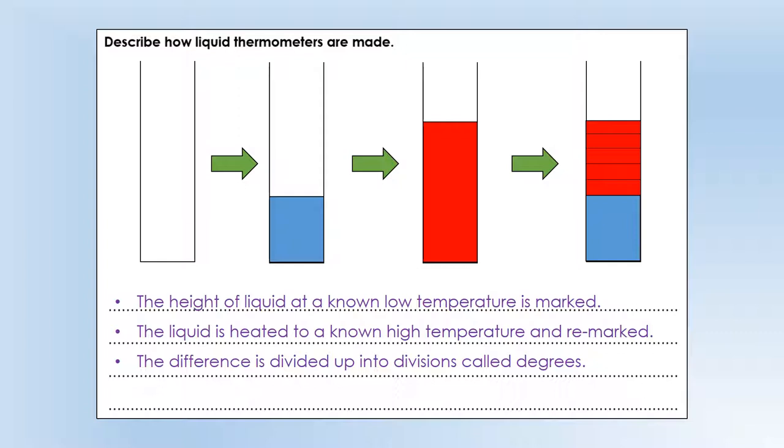Then all you have to do is divide the difference up into divisions and that's what a degree is essentially. It's the divisions when you split 100 and 0 into 100 equal divisions. So typically thermometers use two fixed points, the fixed points of water. They use the melting point of water at 0 degrees as the low temperature and the boiling point of water at 100 degrees as the high point, and we divide that into 100 and that's what a degree is.